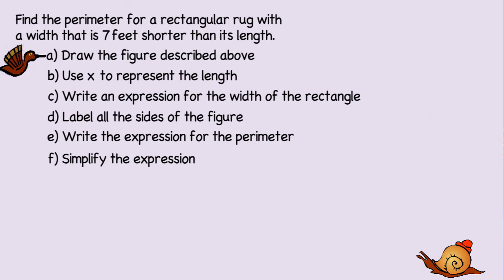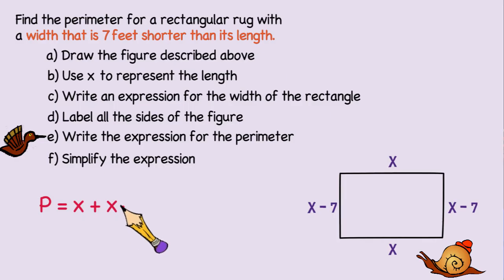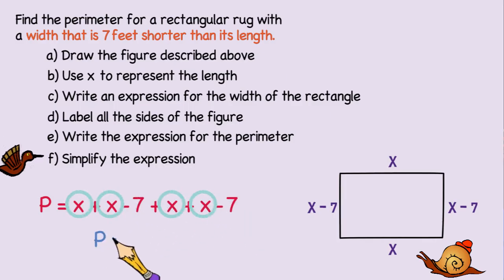So this is a rectangular rug, so the first thing we're going to do is just draw a rectangle. Using x to represent the length. I'm going to go back to the original problem. It says the width is seven feet shorter than the length, so we'd write that as x - 7. To find the perimeter, we would add all the sides of the rectangle. That'd be x + (x - 7) + x + (x - 7). And then by combining like terms, we see that we have 4x - 14.